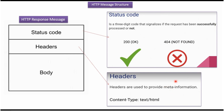Headers are used to provide meta information, which is additional information to the response. For example, the server can send the header Content-Type to the client. If Content-Type is text/html, the client can understand the response is in HTML format. Similarly, the server can specify Content-Type as XML if the response is in XML format. There are many additional headers available, and this is just one example.